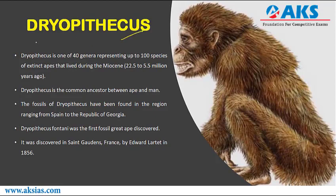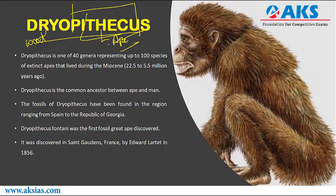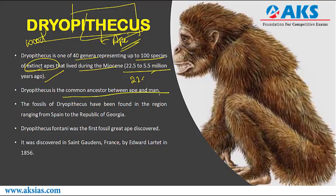The literal translation of Dryopithecus: breaking down the word, 'Dryo' means wood and 'Pithecus' means ape. Whenever you come across 'Pithecus,' it is referring to ape. Dryopithecus is one of about 40 genera representing up to 100 species of extinct apes that lived in the Miocene Epoch, flanked between 22.5 to 5.5 million years ago. Dryopithecus is considered a common ancestor between ape and man.